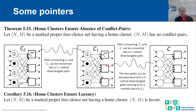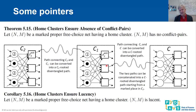These results lead to the main theorem of the paper — Theorem 5.15 — which states that there cannot be conflict pairs in a marked proper free choice net having a home cluster. The proof works by assuming we have a home cluster C and then supposing for contradiction that conflict pairs exist.